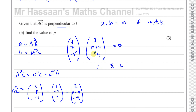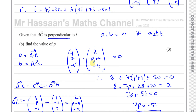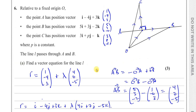Computing the dot product: 4 times 2 is 8, plus 7 times (p+4) is 7p plus 28, plus (-5) times (-4) is plus 20, and that must equal zero. So 8 plus 7p plus 28 plus 20 equals zero, giving 7p plus 56 equals zero, so 7p equals negative 56, therefore p equals negative 8.